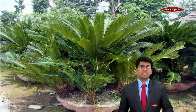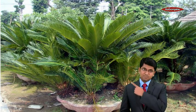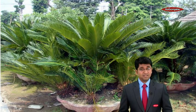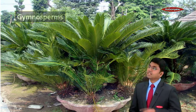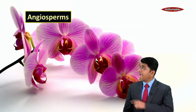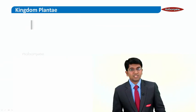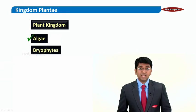You must have seen this picture in gardens — this is a picture of cycas, and they are included in a category known as gymnosperms. Last but not least, look at the beautiful picture of the orchid — orchids are included in a category known as angiosperms.